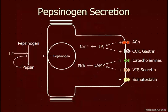Pepsinogen secretion at chief cells is triggered by ACH and CCK. CCK and gastrin are from the same family, so CCK receptors are weakly sensitive to gastrin and vice versa. These two mechanisms work by increasing calcium concentration, which is essential in the binding of vesicles to the membrane. Catecholamines like norepinephrine, VIP, and secretin work through cyclic AMP mechanisms to increase protein kinase A, phosphorylating vesicles and enhancing their fusion to the membrane. Somatostatin inhibits cyclic AMP production via an inhibitory G protein. Once pepsinogen is in the lumen, the high hydrogen ion concentration cleaves the protective amino acids, creating pepsin, which then enhances production of more pepsin from pepsinogen in a positive feedback mechanism.